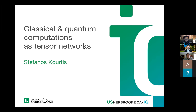He did a second postdoc at Boston University and is currently an assistant professor at the University of Sherbrooke in the Department of Physics. Stephanos has worked broadly in condensed matter theory — on frustrated magnetism, topological phases of matter, strongly correlated systems — and has developed novel numerical methods for quantum materials and quantum information. Today he will tell us about tensor networks. Welcome, Stephanos — please take it away.